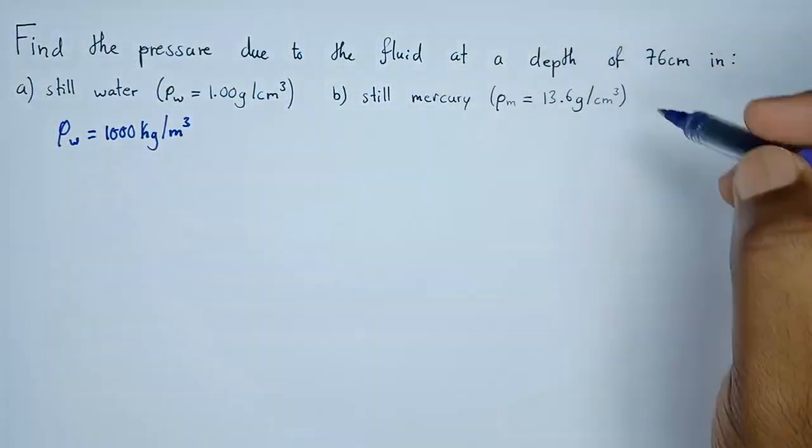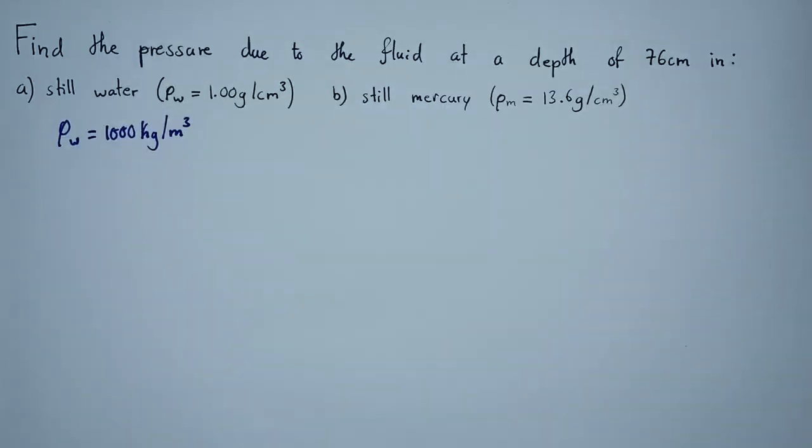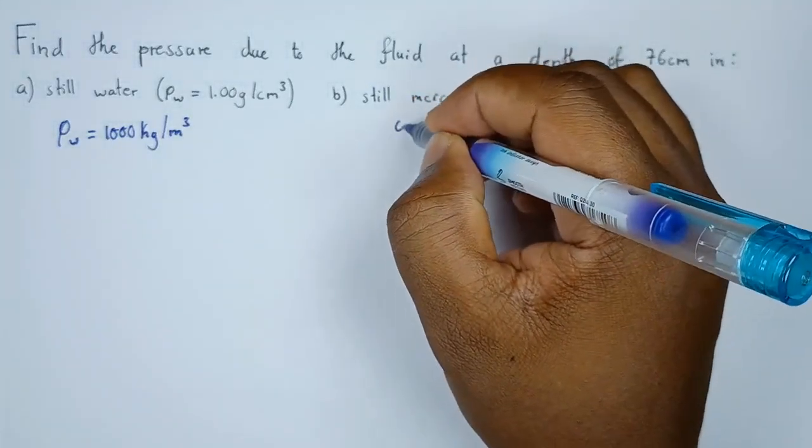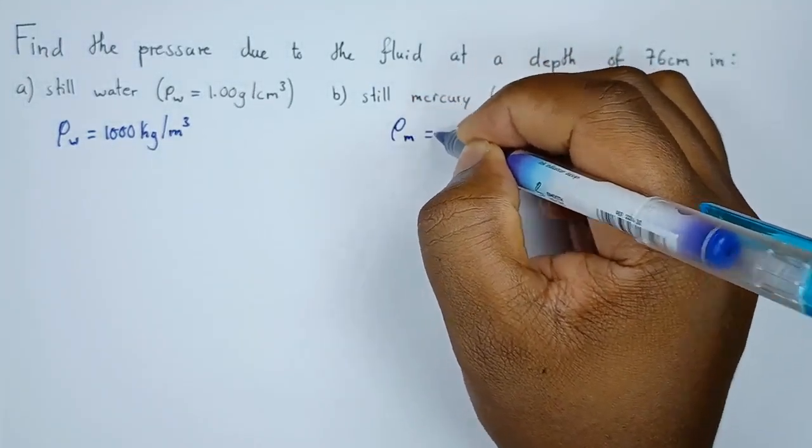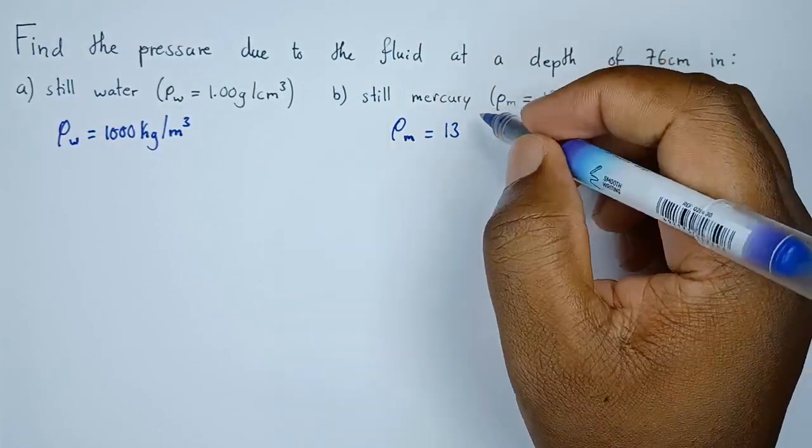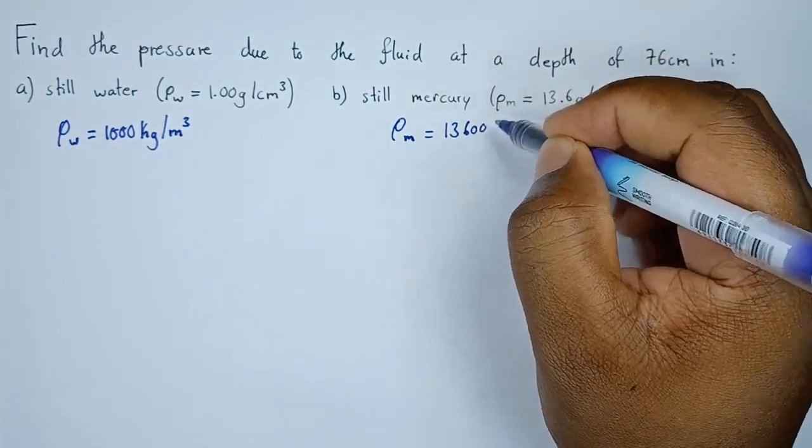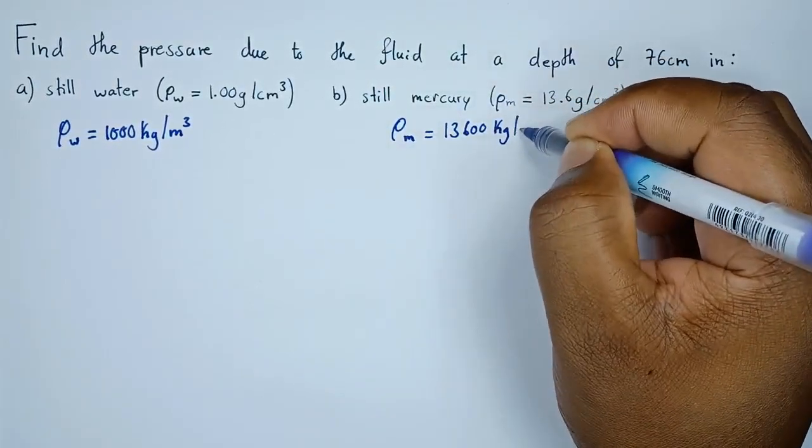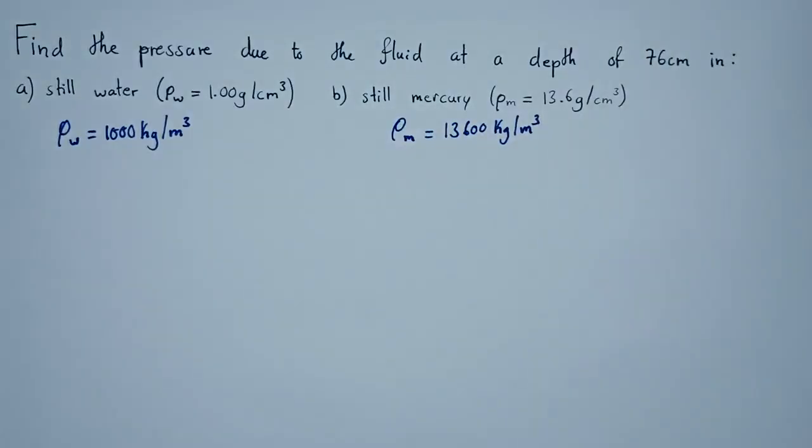For mercury, if you multiply by 1000 again we'll get the density for mercury as 13,600 kg per cubic meter.